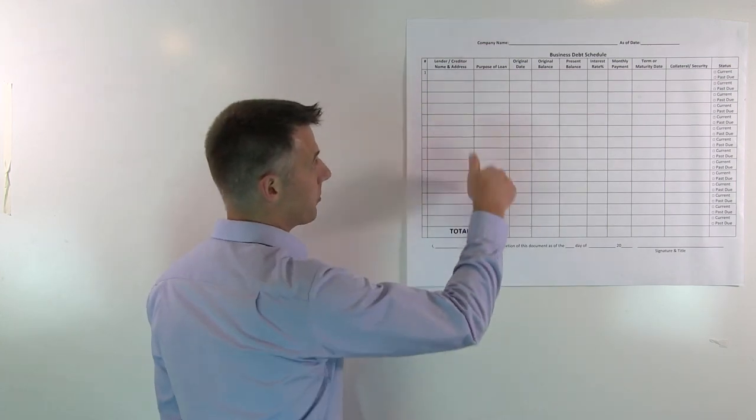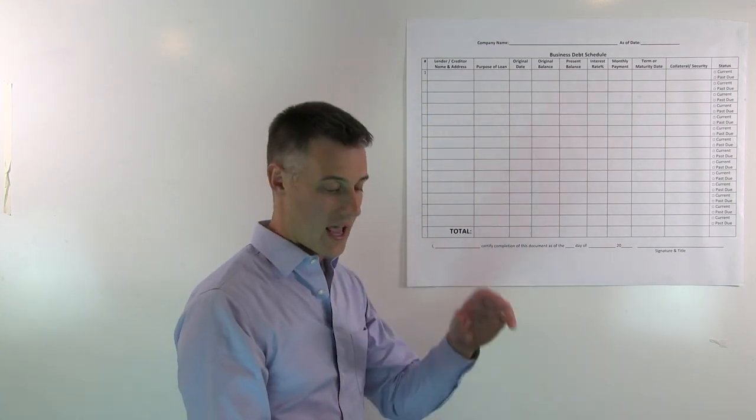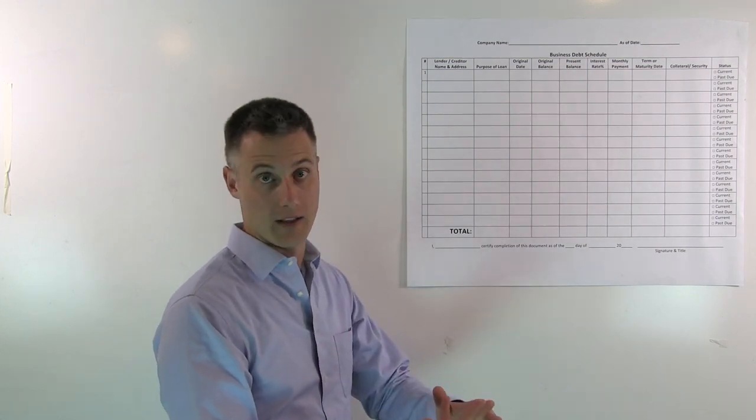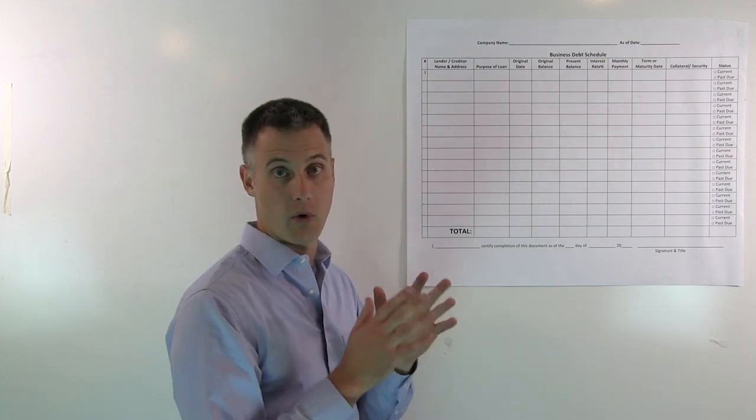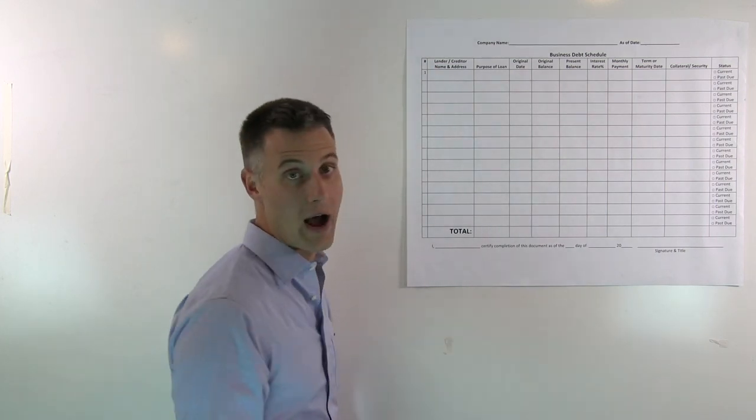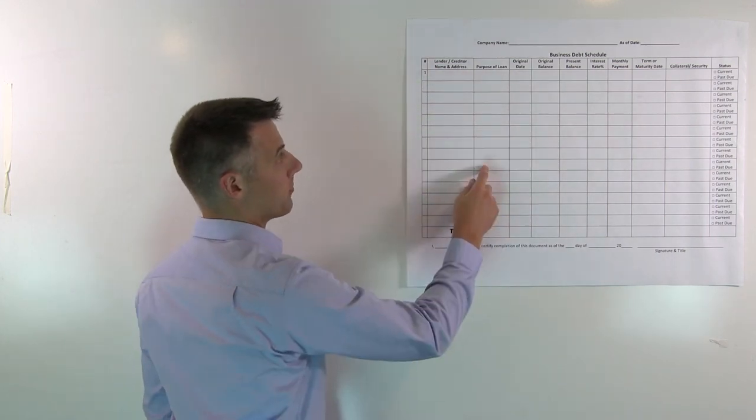All right, so the name of the creditors, the purpose of the loan: working capital, buying real estate, equipment loan, inventory, stuff like that. What was it specifically used for? Buying out a partner. So put the purpose there.